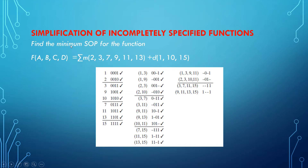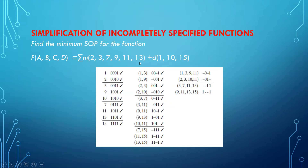We will take this example: find the minimum sum of products for the function f(a,b,c,d) = Σm(2,3,7,9,11,13) with don't care conditions d(1,10,15). When don't care conditions are given, you just consider them as normal minterms. So rewrite this as Σm(1,2,3,7,9,10,11,13,15) — the don't care conditions are treated as normal conditions.